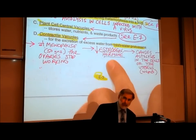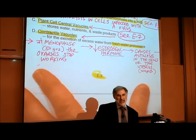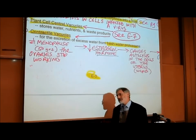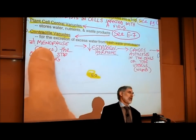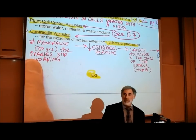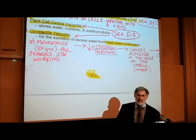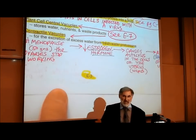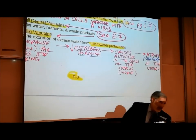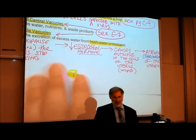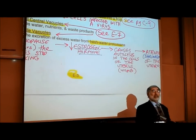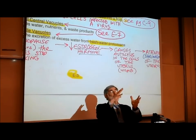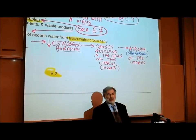The drop in the estrogen hormone level — because the ovaries are no longer producing estrogen — causes a number of changes in a woman's body: changes in her skin, changes in her bones making osteoporosis more likely, and other changes. The drop in estrogen triggers autolysis in the cells of a woman's uterus — the lysosomes rupture and the uterine cells self-destruct. So the whole uterus atrophies. The word atrophy means to shrink.